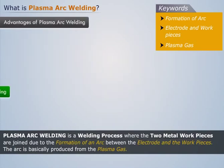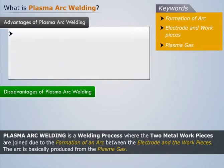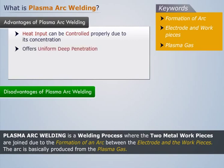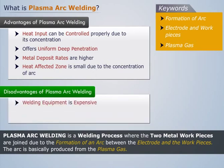Now, let us list the advantages and disadvantages of plasma arc welding. The advantages are as follows: the heat input can be controlled properly due to its concentration; it offers uniform deep penetration; the metal deposit rates are higher and the heat affected zone is small due to the concentration of arc. The disadvantages are as follows: the welding equipment is expensive, and the nozzle surrounding the electrode needs frequent replacement.